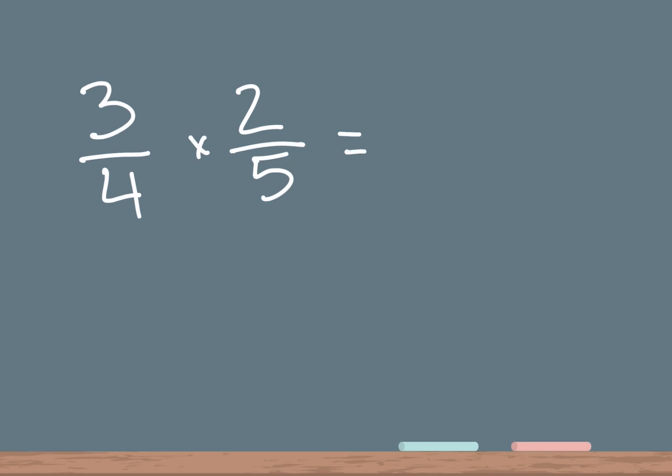Okay, our second problem on the board is 3 over 4 times 2 over 5. So first step is to multiply the numerator, which is the top number. So 3 times 2 is 6. And then second step is to multiply your denominator, which is your bottom number. So 4 times 5 is 20.